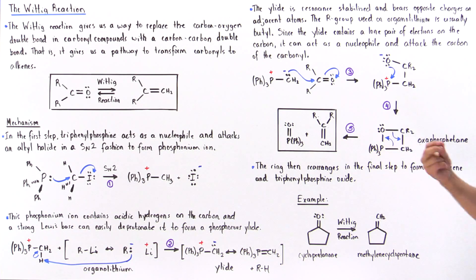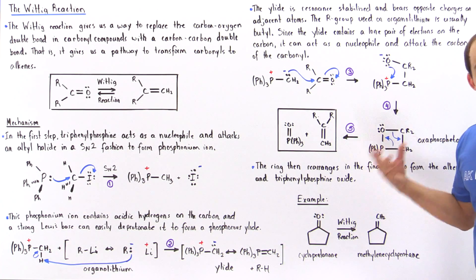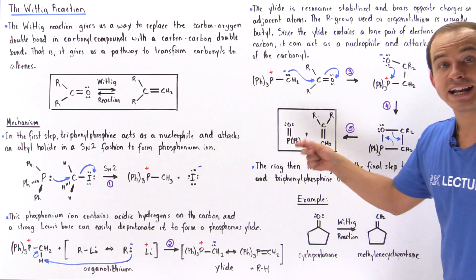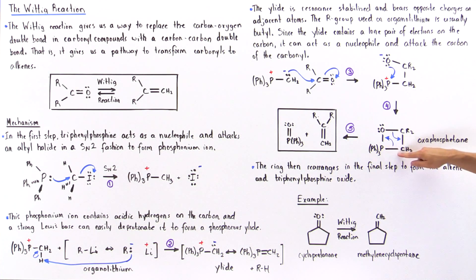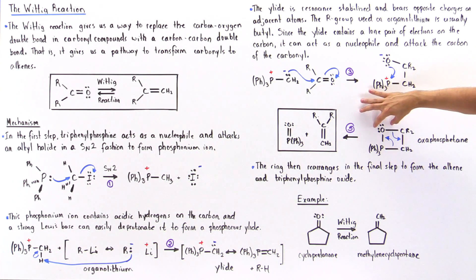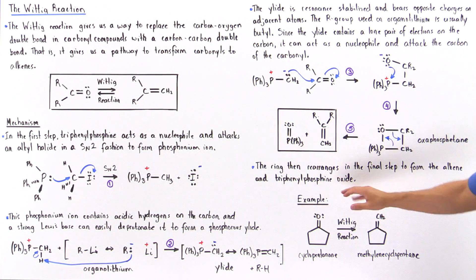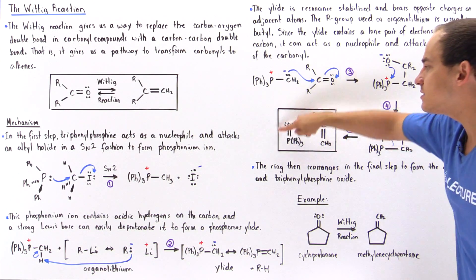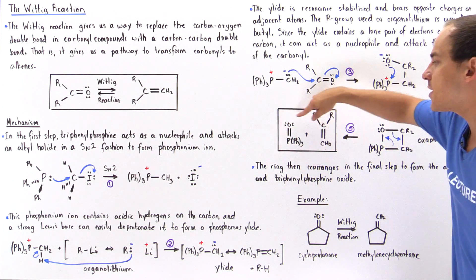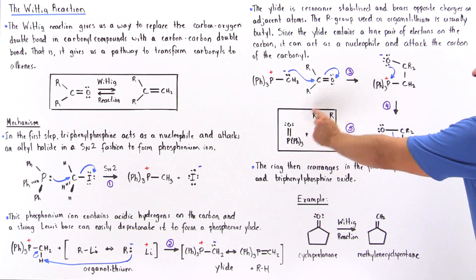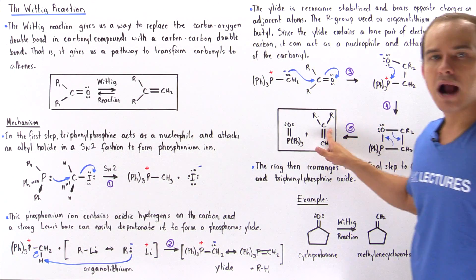We now have an electron-deficient phosphorus and an oxygen with excess electrons in close proximity. Electrostatic attraction causes a bond to form between oxygen and phosphorus, creating a four-membered ring. This four-membered ring is very unstable due to ring strain, and quickly breaks down. The bond breaks to form a pi bond between phosphorus and oxygen, producing the thermodynamically very stable molecule triphenylphosphine oxide, and simultaneously the C–C bond forms to give the alkene.